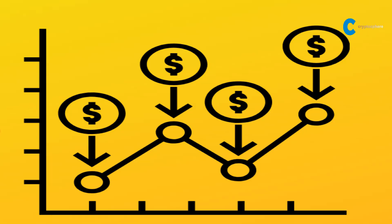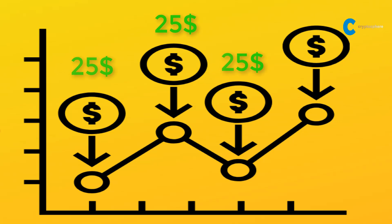What dollar cost averaging basically means is that you invest the same dollar amount into an asset at regular intervals. In our example, we will invest $25 into Bitcoin every week, but the intervals could also be monthly or quarterly. You can make this a recurring buy and set it on autopilot. That's what's so great about this strategy — it takes the emotion out of it.